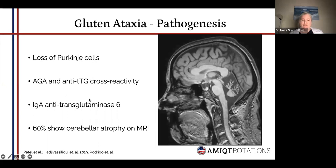So in terms of pathogenesis of gluten ataxia, we see mainly loss of Purkinje cells. It'll affect the deep cerebellar nuclei and then the Purkinje cells. This is usually due to cross-reactivity, both with anti-gliadin antibody and anti-transglutaminase. One of the main ones being shown more and more in the literature recently is IgA anti-transglutaminase-6 in particular, which might be something in the future for screening purposes. And 60% of the time they do show some cerebellar atrophy on MRI.